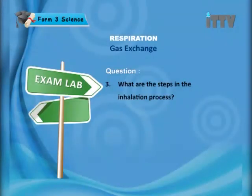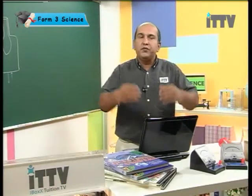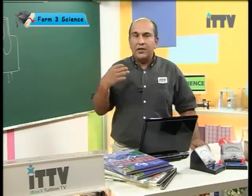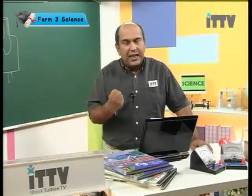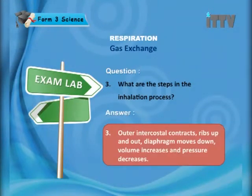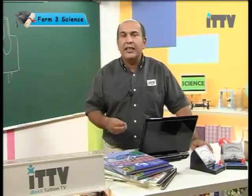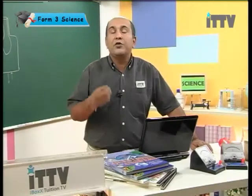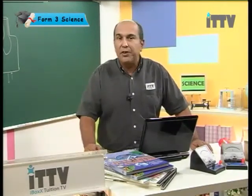What are the steps in the inhalation process? Remember, you've got to tell them every single step — there are a lot of marks to be gained here. Let's compare our answers: outer intercostals contract, ribs up and out, diaphragm moves down, volume increases and pressure decreases. Remember those steps in the inhalation process — they're quite important and you will probably have to use them during your exams.